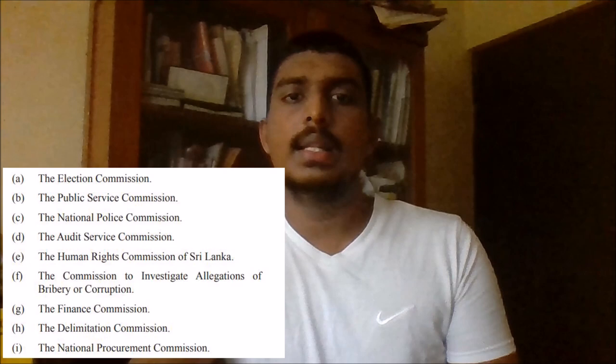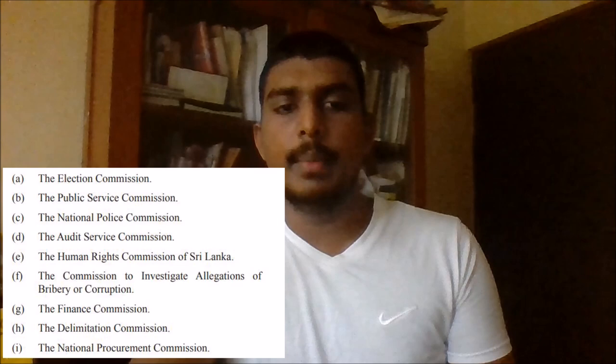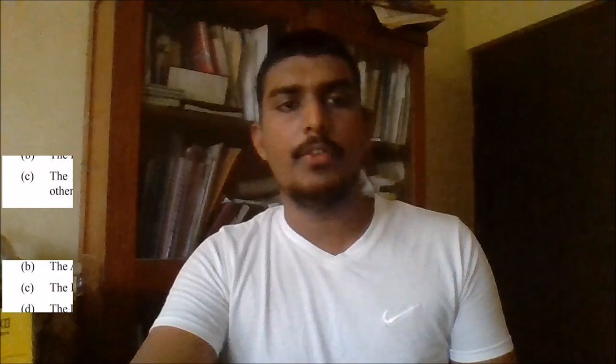Another important article is Article 41A paragraph 1, which makes provision for the establishment of the constitutional council. According to Article 41B paragraph 1, for listed commissions the president must act on the recommendations of the constitutional council — meaning without such a recommendation the president cannot appoint members. Article 41B paragraph 3 similarly limits the president's powers by requiring him to act on the council's recommendations when appointing chairmen. According to Article 41C paragraph 1, the constitutional council must approve the president's nominees for certain positions, so the president cannot make an appointment if his nomination is not approved. These articles clearly limit the president's powers.